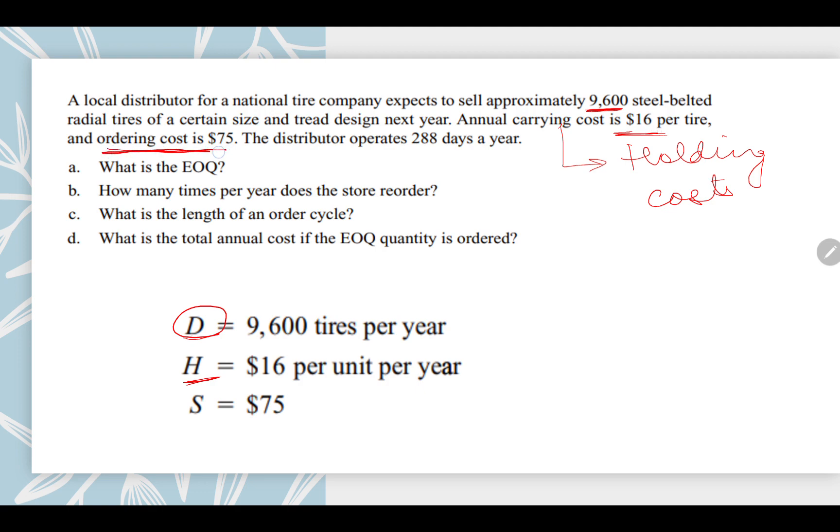Ordering cost they have given you, S, that is $75. And they have also given you that the distributor is working 288 days in a year.